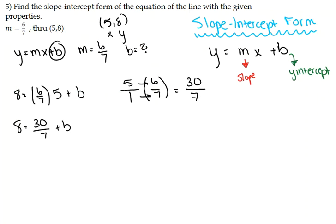Now that we have that reduced, we can get the simplified right-hand side of 30 divided by 7 plus b. We want to solve for our b, so we're going to isolate it by subtracting 30 divided by 7 from both sides.